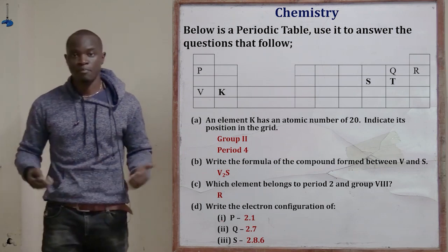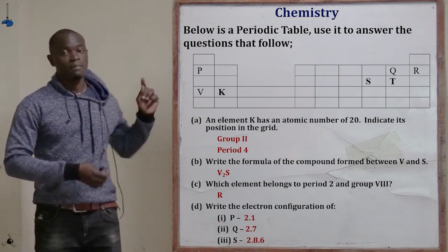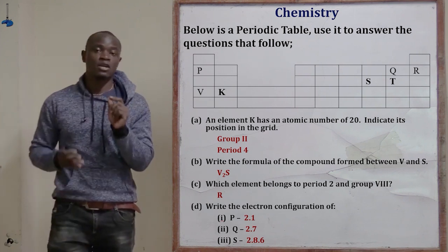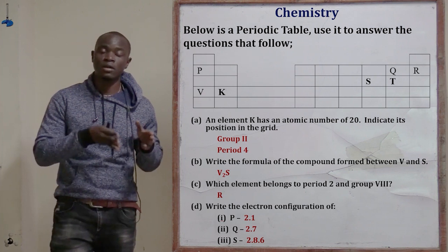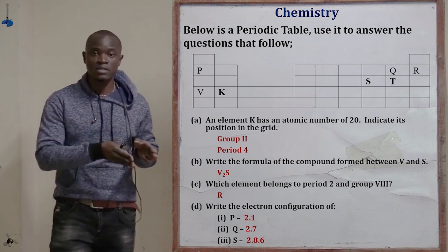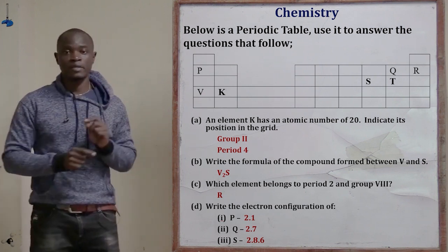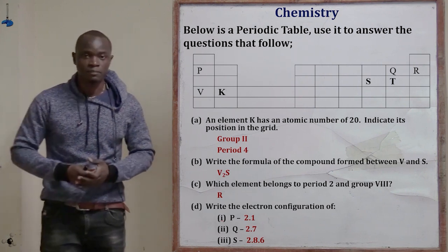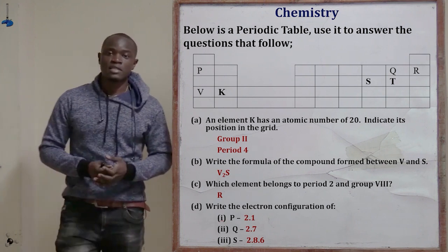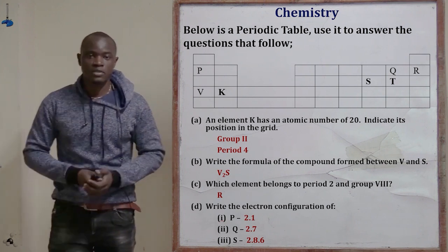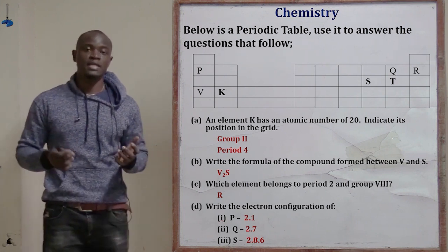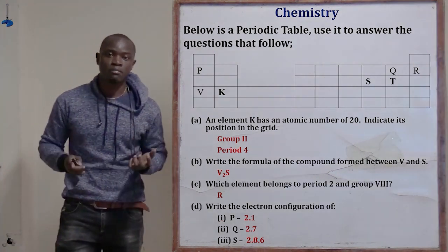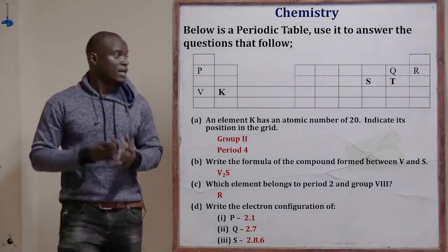The table below shows some elements in the periodic table. Take note that those letters are not the exact chemical symbols for the elements which are being represented — they are jumbled or random letters that you are going to use. The second part of the question says to use it to answer the questions that follow, and we are told that the letters do not represent the actual symbols of the elements.